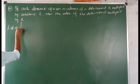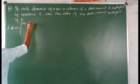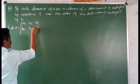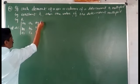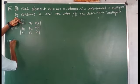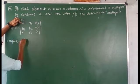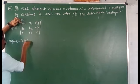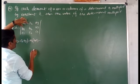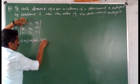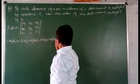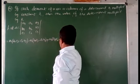Let delta be equal to the determinant with elements a1, a2, a3 in the first row; b1, b2, b3 in the second row; and c1, c2, c3 in the third row. The expansion of this is: a1 times (b2·c3 − c2·b3) minus a2 times (b1·c3 − c1·b3) plus a3 times (b1·c2 − c1·b2).